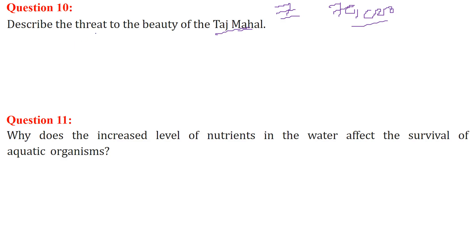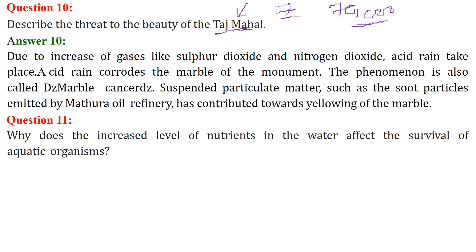If there is a threat to the Taj Mahal, we will be losing a lot of money, foreign exchange, and something very important in our country. Due to the increase in gases like SO2 (sulfur dioxide) and nitrogen dioxide, acid rain takes place. The acid rain corrodes the white marble of the monument — this phenomenon is known as marble cancer. Suspended particulate matter such as soot particles emitted by the Mathura oil refinery also comes with air to affect the Taj Mahal. That is why the clean white marble has already become yellow.